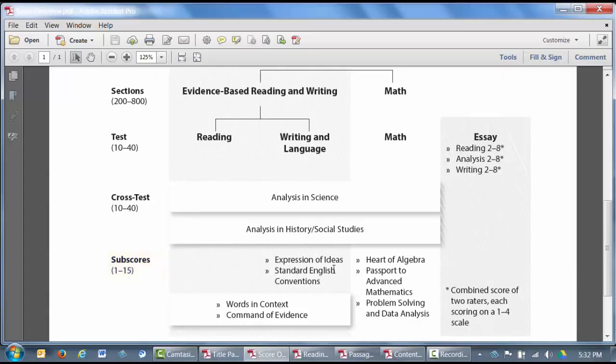In addition to sub-scores, you'll also see some cross-test scores. These scores will be reported on a scale of 10 to 40 and will be based on selected questions from the reading, writing and language, and math tests that reflect the application of reading, writing, language, and math skills in history, social studies, and science contexts. All of these scores help to build a better, more detailed picture of your college and career readiness.